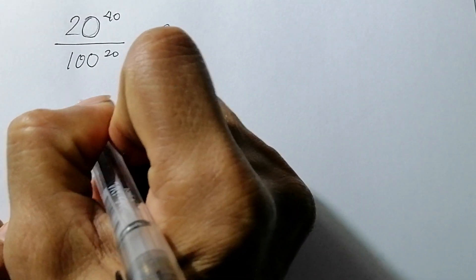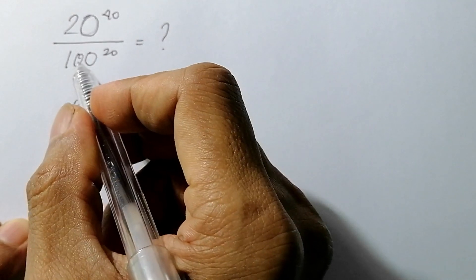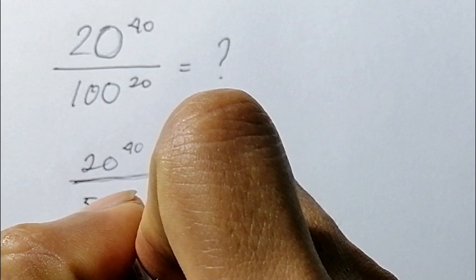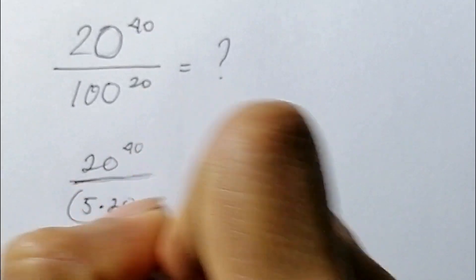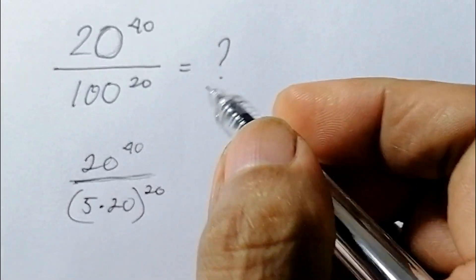We're going to write 20 raised to 40. We are going to factor the 100 - we're gonna write it as 5 multiplied by 20, so the same as 100, raised to the power of 20.